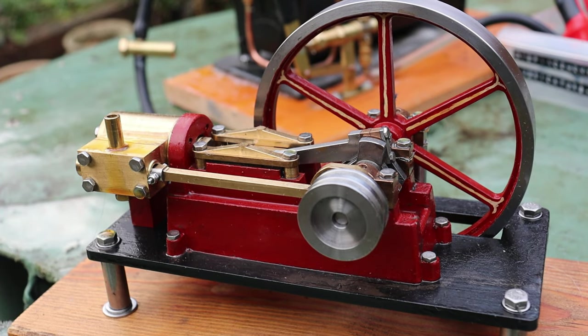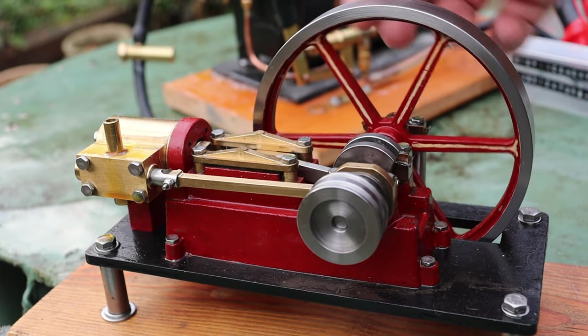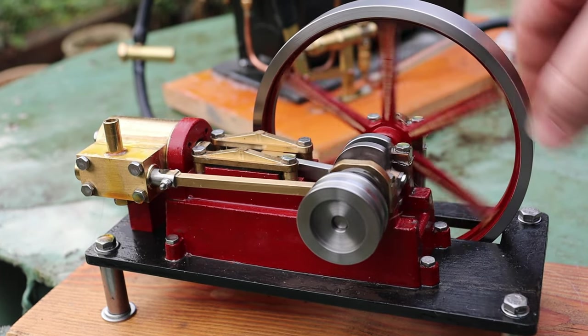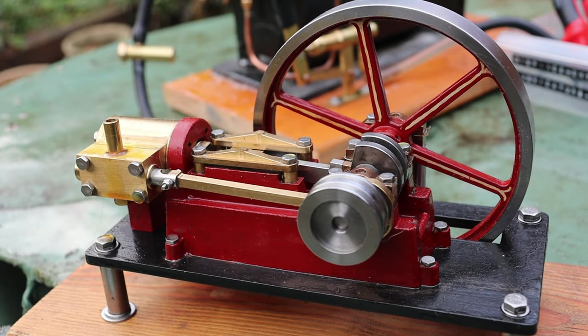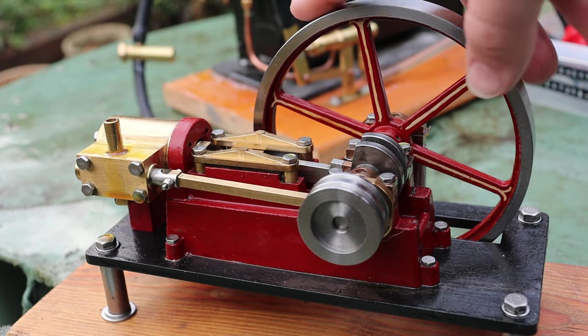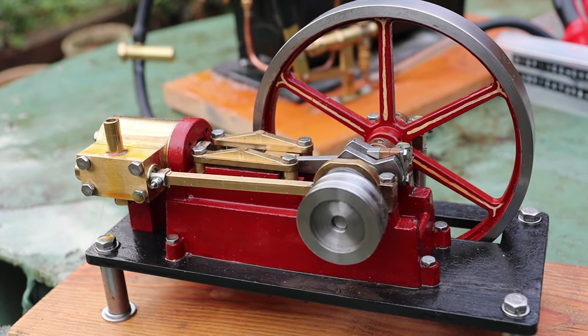So here is engine number one for the series, and this is a Chilton Models limited edition mill engine. We're going to get it running, so I'll get the steam connected. The boiler has already come to pressure. I'll get the engine lubricated and we'll see if it runs.